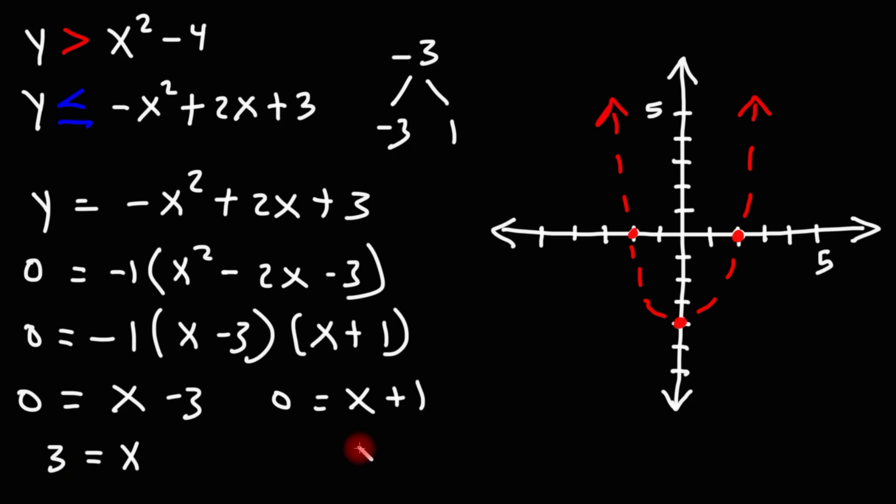Subtracting 1 from both sides, we get x is equal to negative 1. So the intercepts are negative 1 on the x-axis and positive 3.